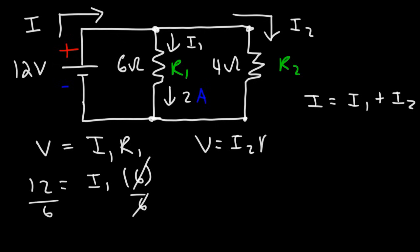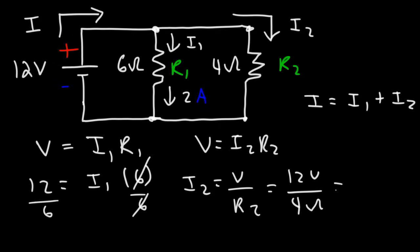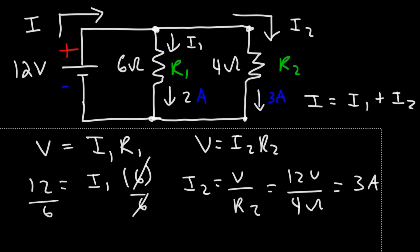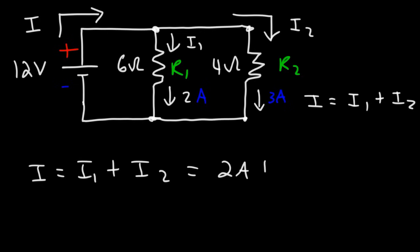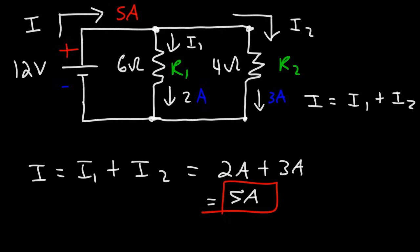Now let's do the same for i2: V = i2 × R2, so i2 = V/R2 = 12 volts divided by 4 ohms, which gives a current of 3 amps. That is the current flowing through the second resistor. So now we can calculate the total current in the circuit: it's i1 + i2 = 2 amps + 3 amps = 5 amps. That's the amount of current flowing away from the battery.